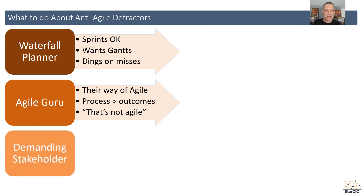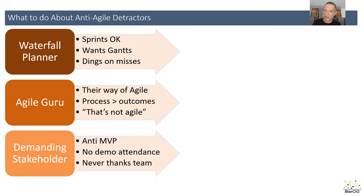Then there are demanding stakeholders. The ones I'm referring to here don't understand or don't believe in minimal viable products. They want to prioritize everything, they don't show up to the demos — and we'll talk about that as a solution — and they rarely thank the team. If you're going to be a stakeholder on my agile team, you better show up to the majority of demos. They're always looking for something more.